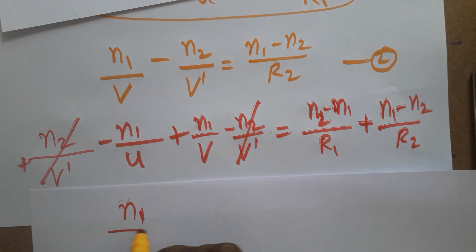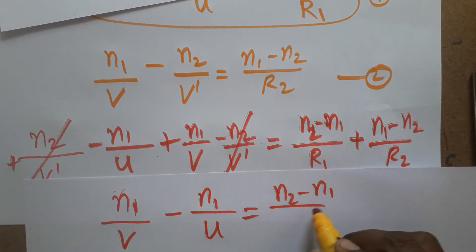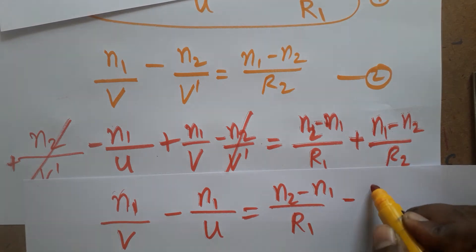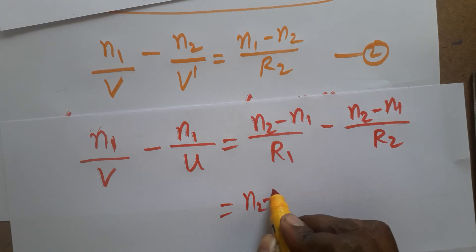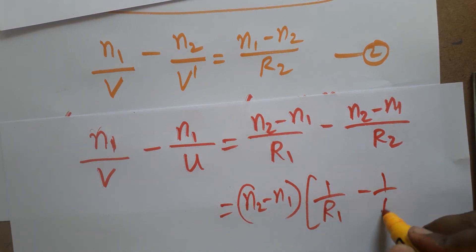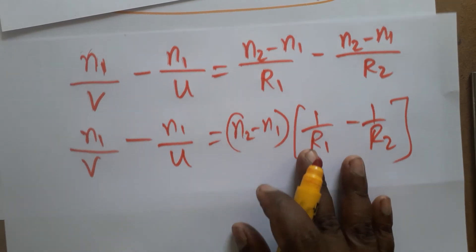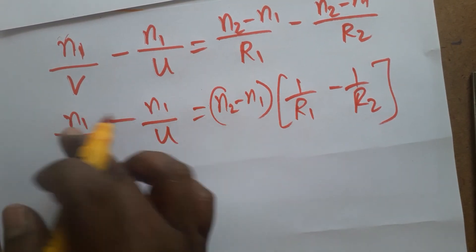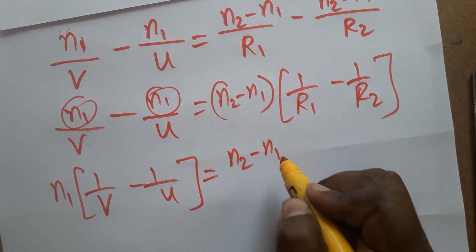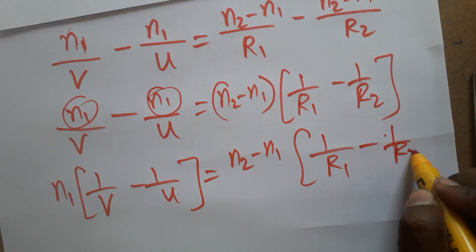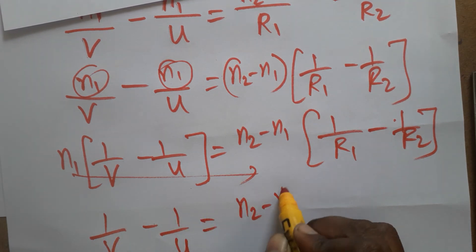After cancellation, the remaining left-hand side is n1/v minus n1/u. On the right-hand side, we factor: n1 minus n2 is taken as common outside, giving (n2 minus n1) times (1/R1 minus 1/R2). Since n1 is common on the left side, we divide both sides by n1, giving: 1/v minus 1/u equals (n2 minus n1)/n1 times (1/R1 minus 1/R2).